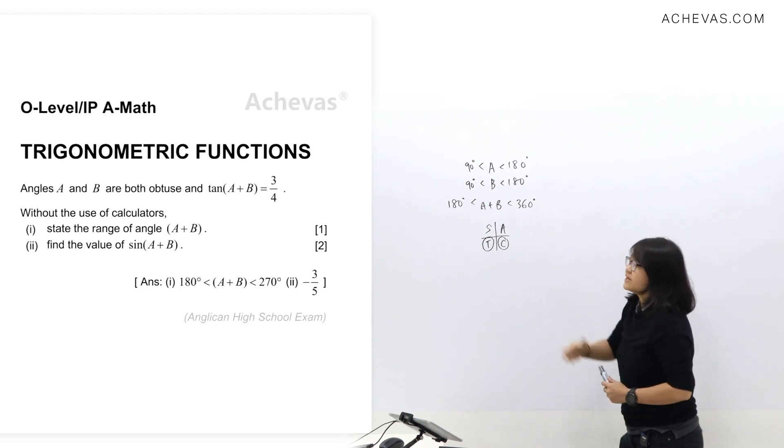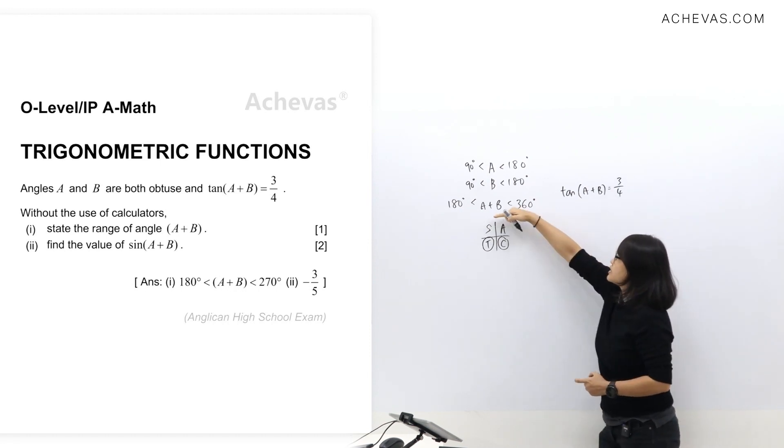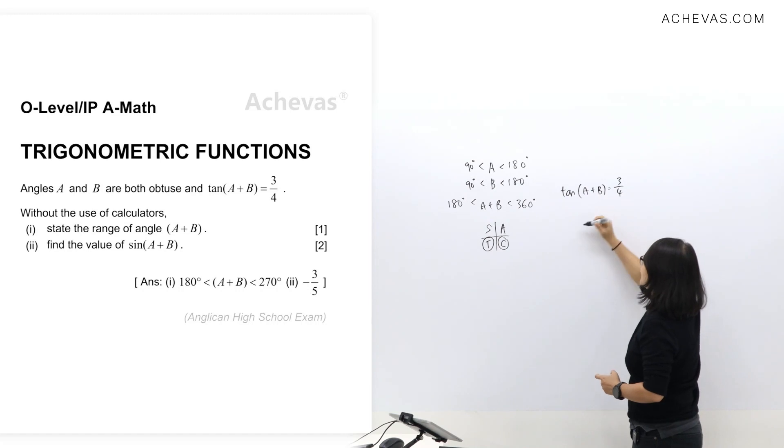Now do remember that you are also given the second information where tangent A plus B equals 3 over 4. That means that the tangent value of angle A plus B is positive. So I need to fulfill this information and this information here.